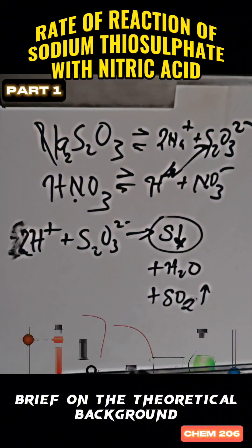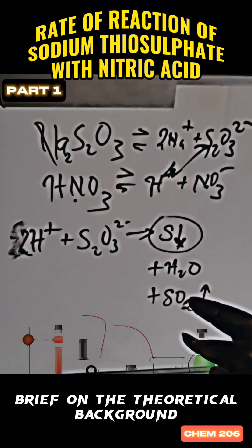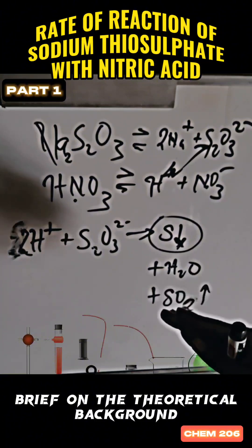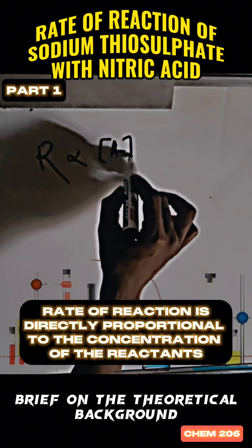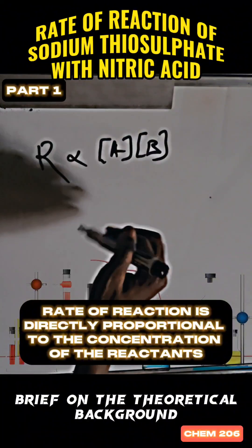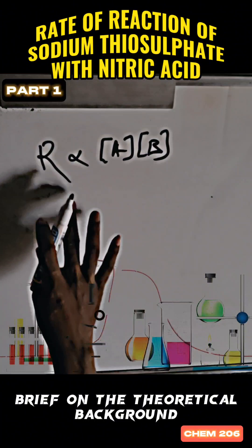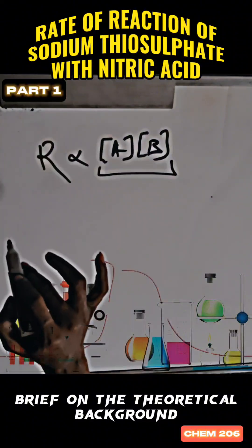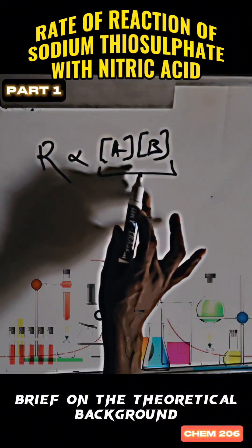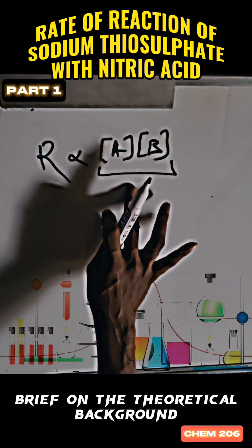Water is added to the reaction mixture to make it more dilute, which reduces the concentration of the reactants. According to the rate equation, rate is directly proportional to concentration of reactants. So addition of water dilutes the mixture and reduces the concentration of sodium thiosulfate and nitric acid.